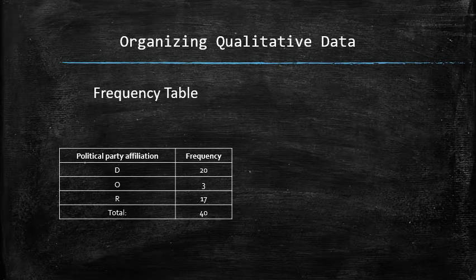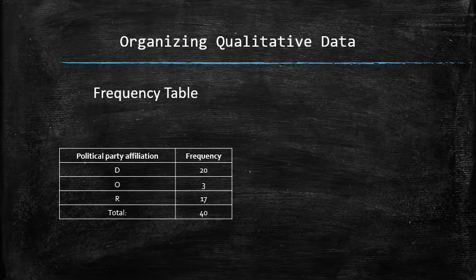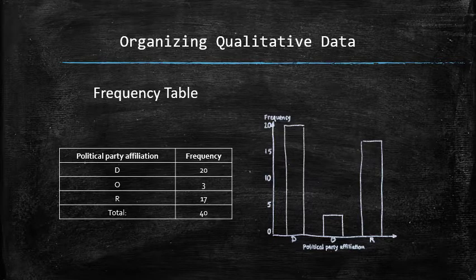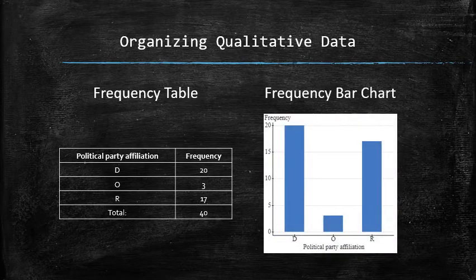One way to visualize a frequency table is to draw a two-dimensional coordinate plane with the categories on the horizontal axis and the frequencies on the vertical axis. For each category, we draw a bar above the corresponding label with the height equal to the frequency. Such a display of frequencies is called a frequency bar chart. The frequency of each distinct value is represented by a vertical bar whose height is equal to the frequency of that value. The bars should be positioned so that they do not touch each other.